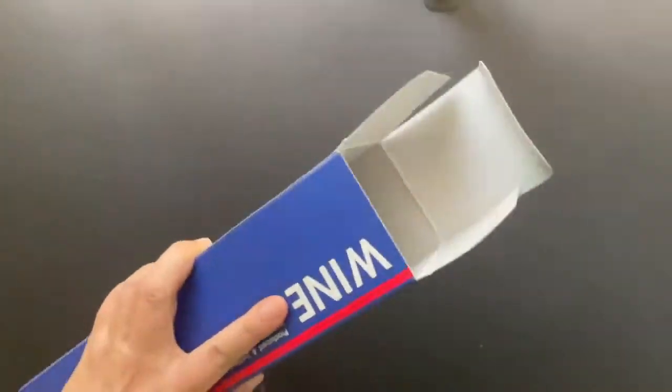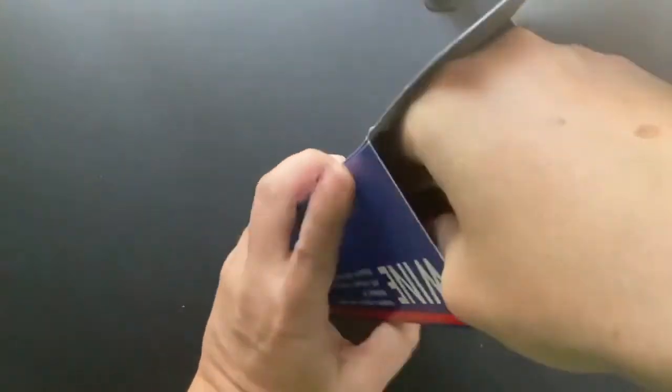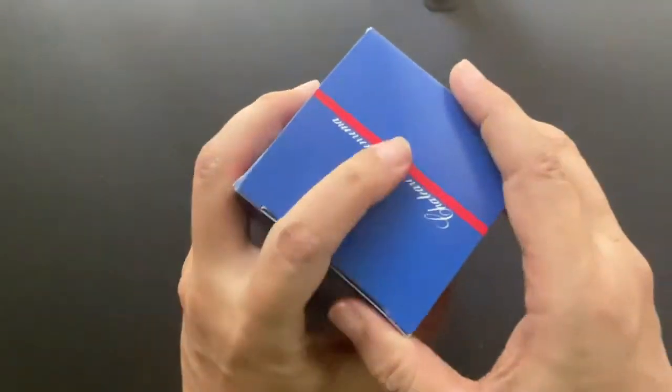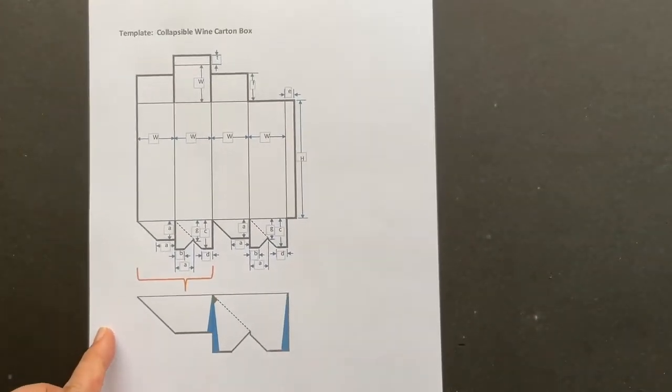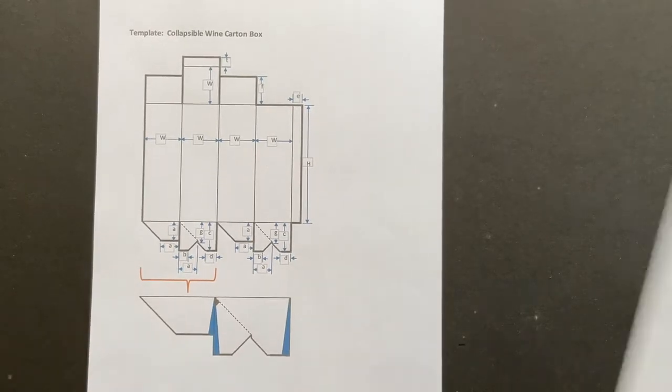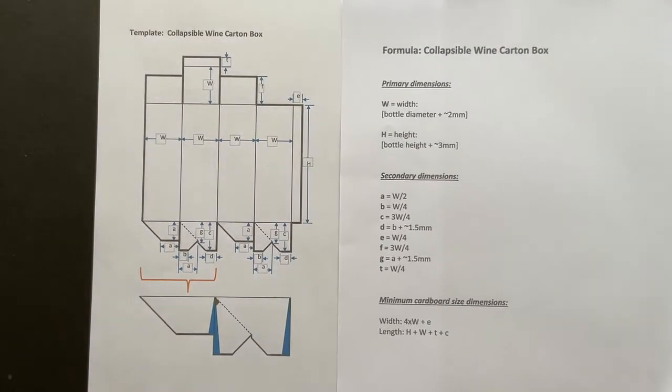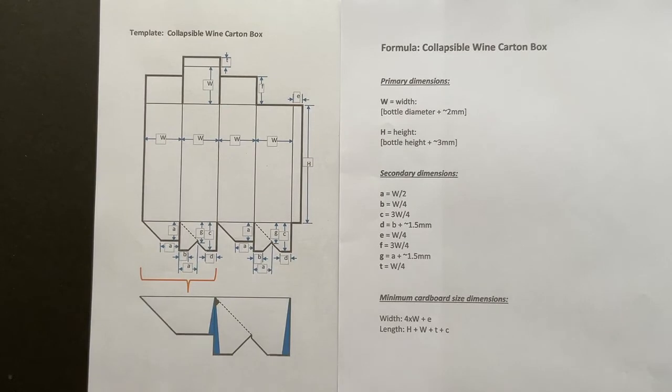Now I'm sharing this do-it-yourself project with you. First, you just need to define the height and width of the box. Then use this template and formula as shown here. You can download the template and the formula files from the links below.